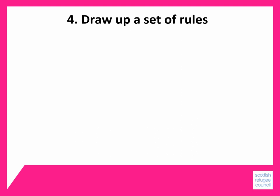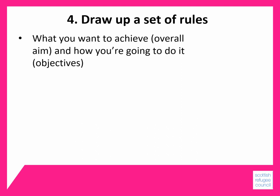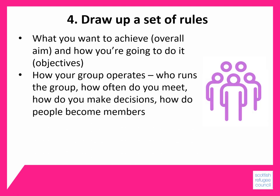Once you know more about what you want to do as a group, it's a good idea to draw up a set of rules. This document should set out what you want to achieve — your overall aim — and how you're going to do it, your objectives. It should also set out how your group operates: who runs your group, how often it meets, how you make decisions, and how people become members of your group.